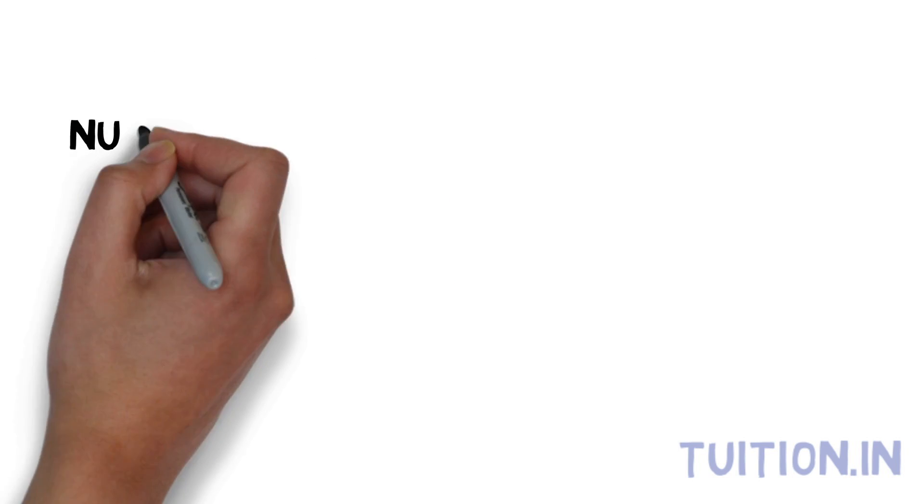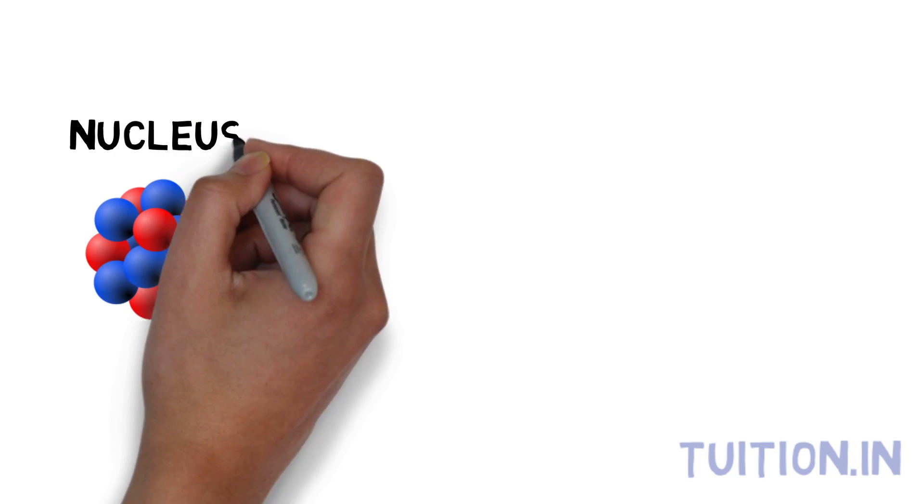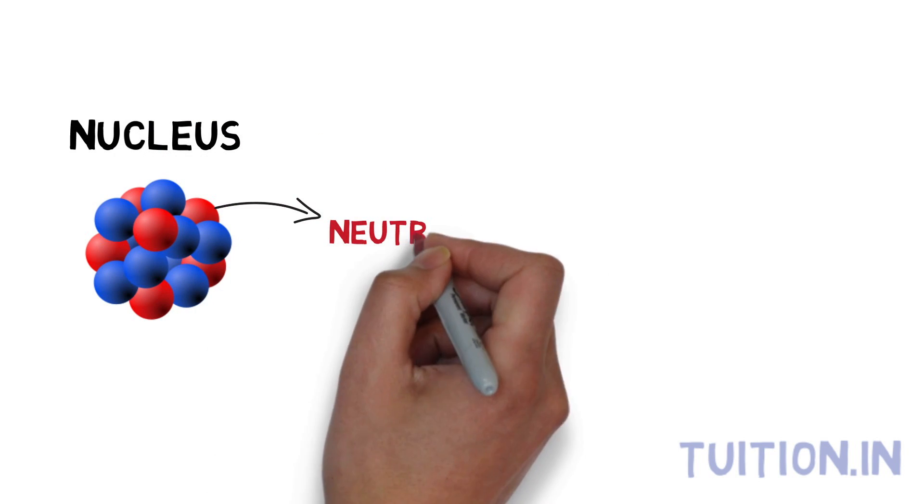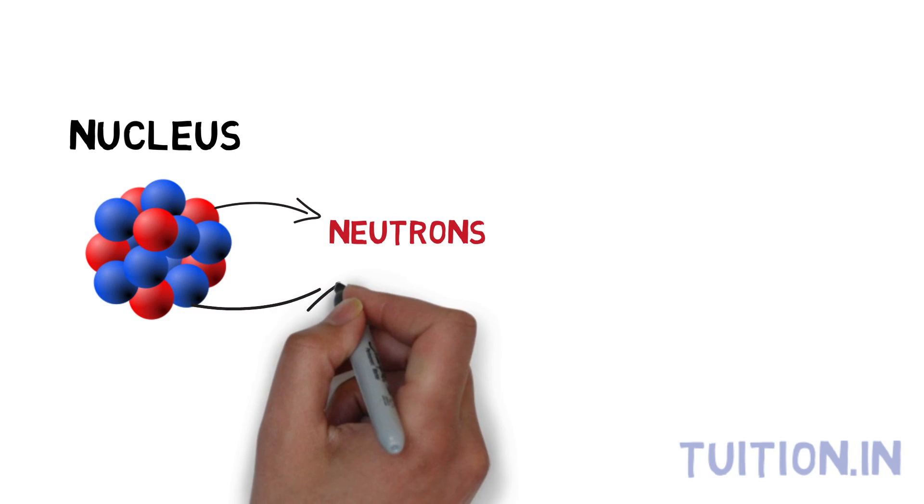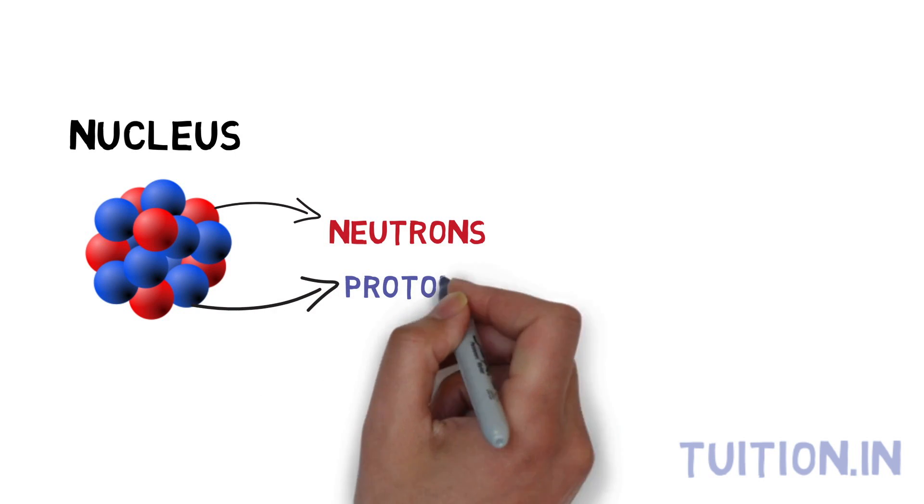Each atom has a dense center called the nucleus. The nucleus contains neutrons which have neutral electric charge and protons which are positively charged.